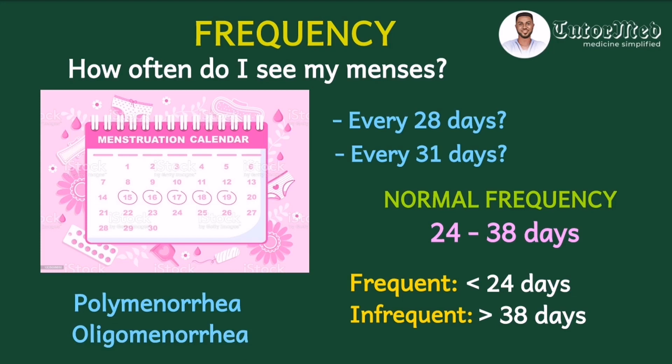If a woman does not see her menses for more than 90 days, she is said to have amenorrhea.